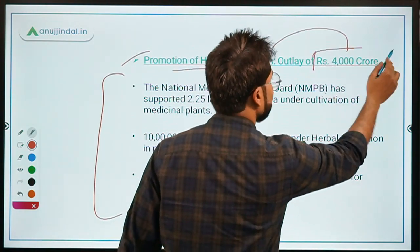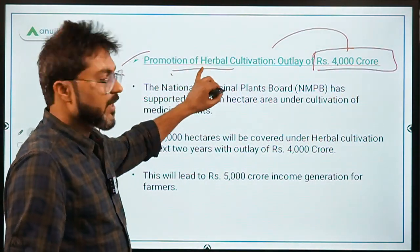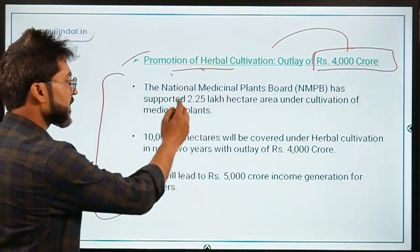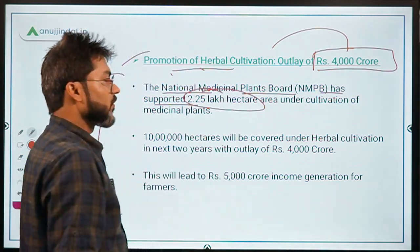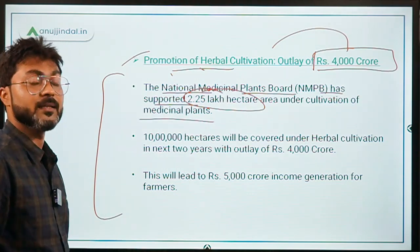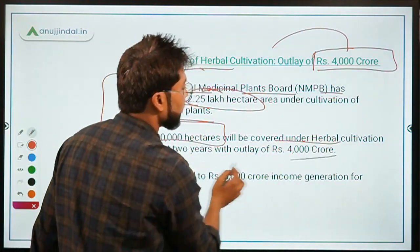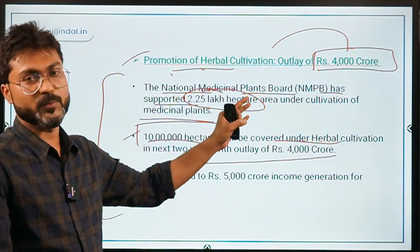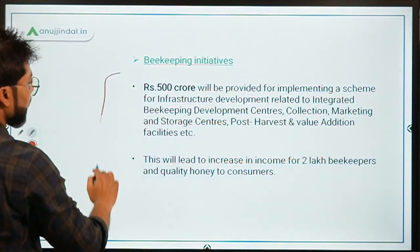For promotion of herbal cultivation, ₹4,000 crore was provided. The National Medicinal Plants Board supported 2.25 lakh hectares under medicinal plant cultivation, and 10 lakh hectares will be covered under the herbal cultivation project.